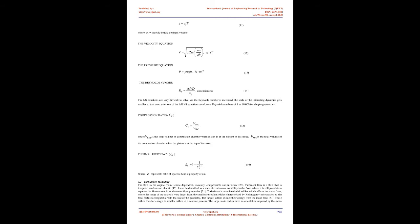The Reynolds number is a dimensionless quantity. The Navier-Stokes equations are very difficult to solve. As the Reynolds number is increased, the scale of the interesting dynamics gets smaller, so that most solutions of the full NS equations are done at Reynolds numbers of 1 to 10,000 for simple geometries.